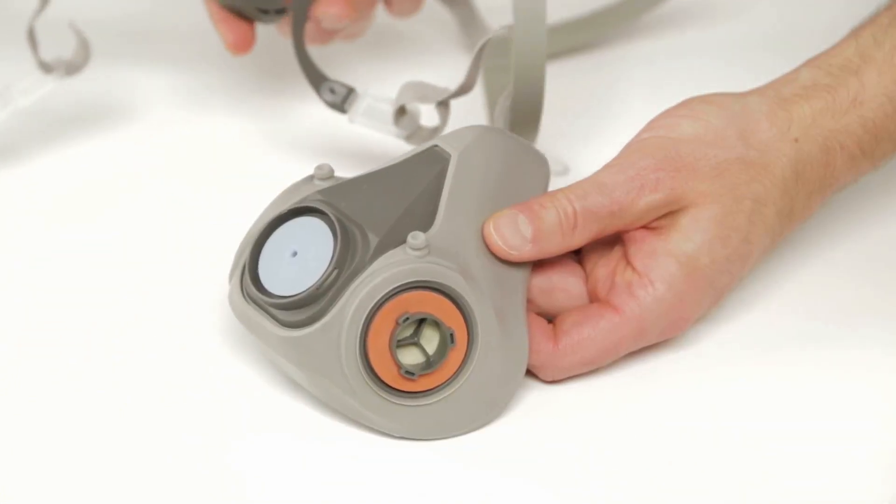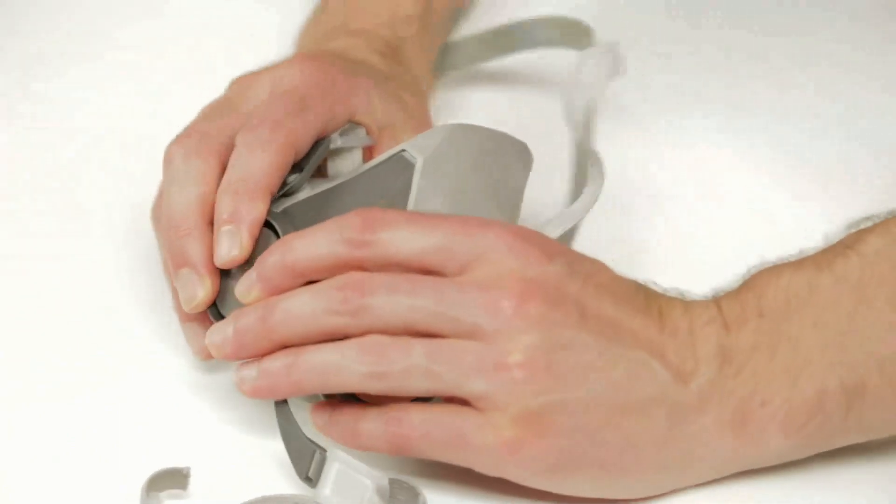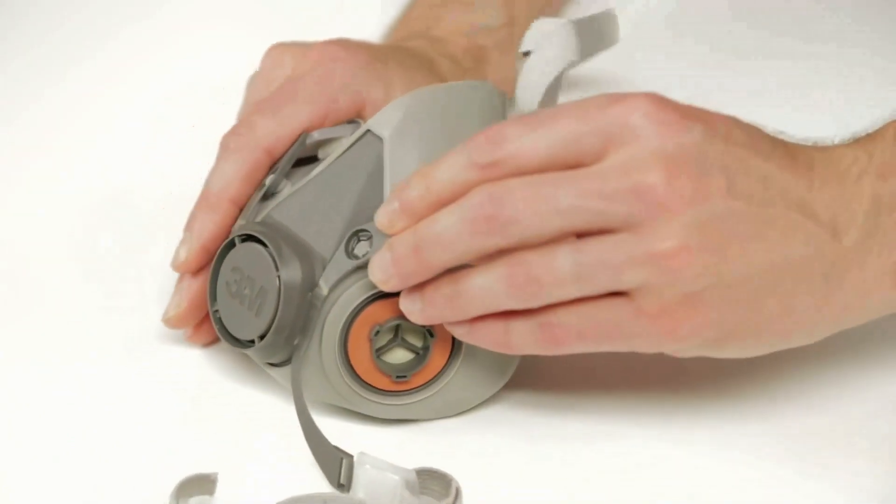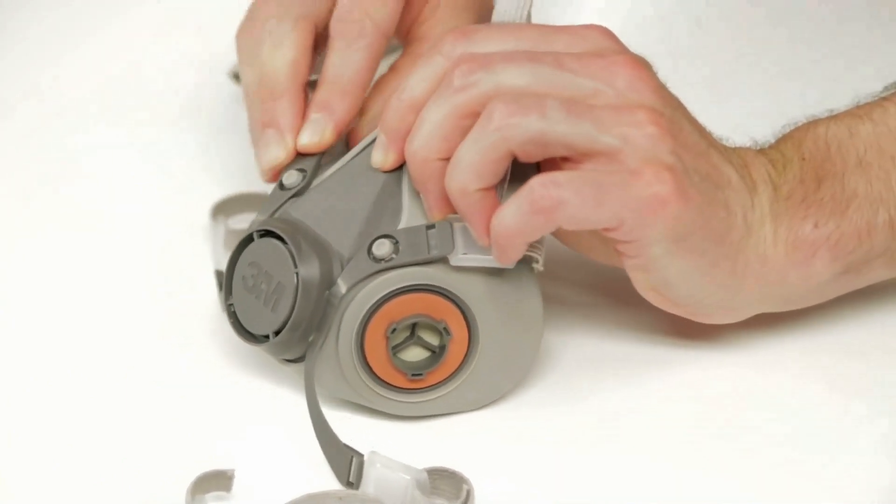To replace the respirator strap assembly, position the valve cover over the facepiece exhalation port and press firmly to snap it into place. Push the upper legs onto the facepiece buttons.